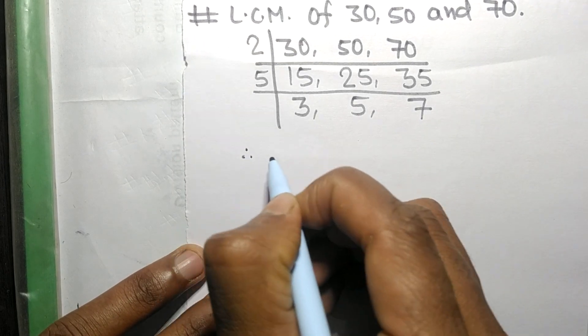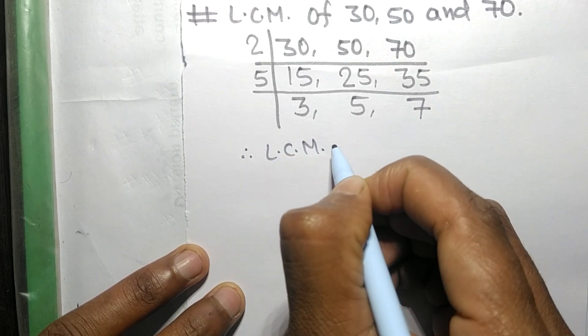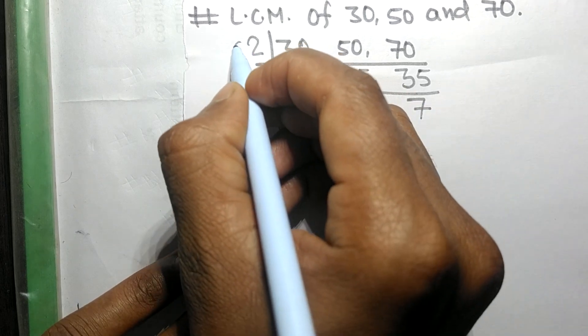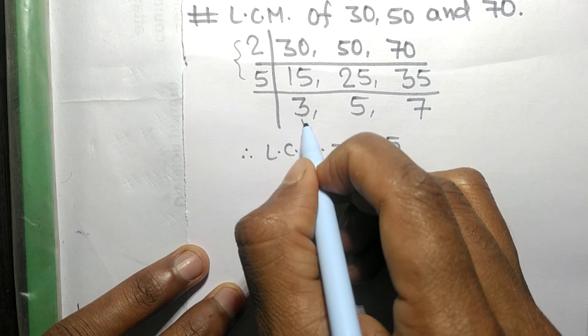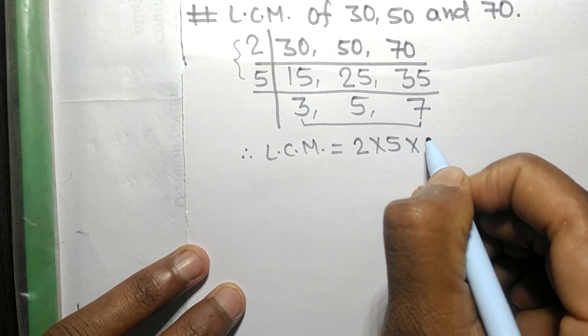Therefore, the LCM is equal to, from this side it is 2 times 5, and from this side it is 3 times 5 times 7.